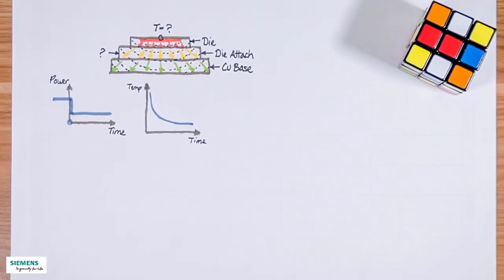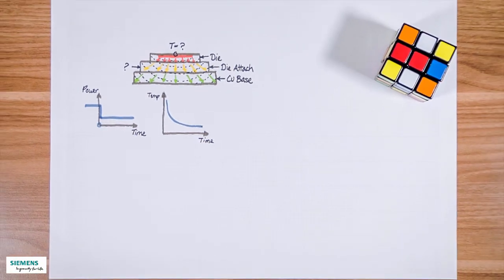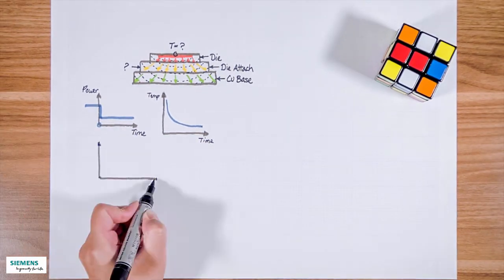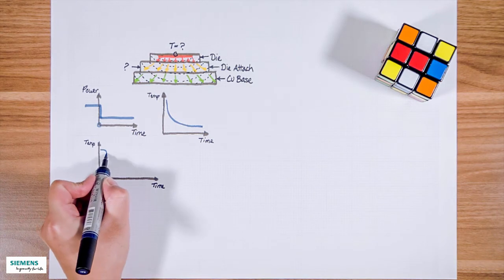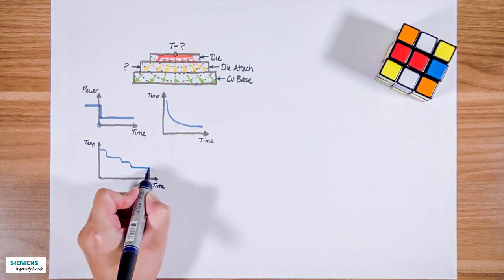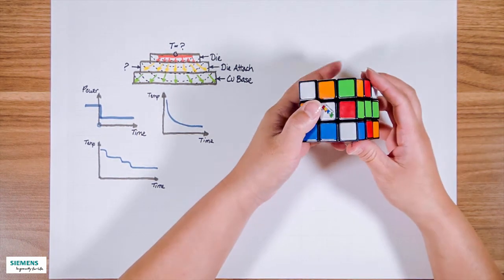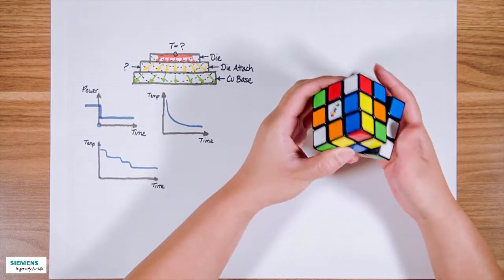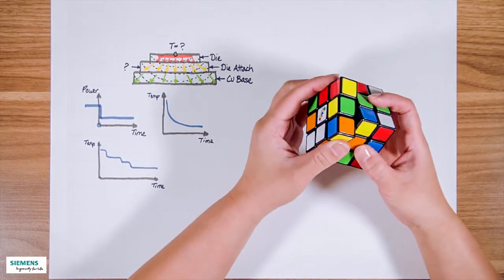such as a die attach, as well as the big ones, like a cold plate. We prefer to show the curve over a logarithmic time scale like this. What is the relationship between this temperature curve and this picture here? This curve can be explained with exponential functions.